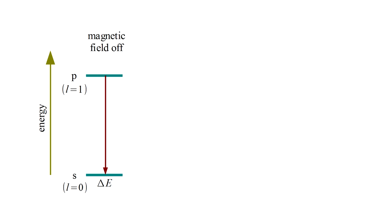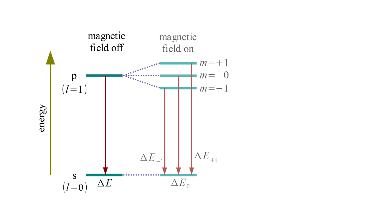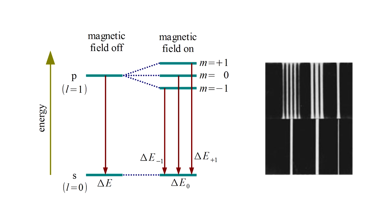For a p-orbital with L equals one, there would be three orientations, hence three split energy levels. For an s-orbital with L equals zero, no angular momentum, hence no magnetic dipole, there should be no splitting. Therefore, transitions from p to s-orbital should split into three distinct lines. The Zeeman effect shows how we can observe the distinct z-components of angular momentum predicted by quantum mechanics.